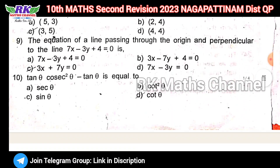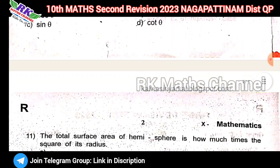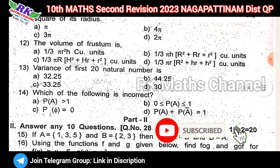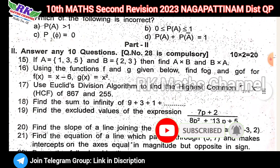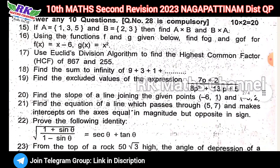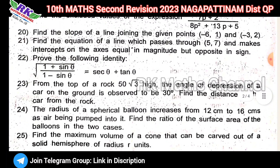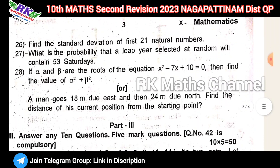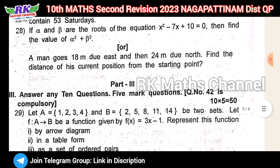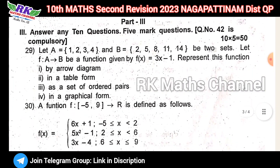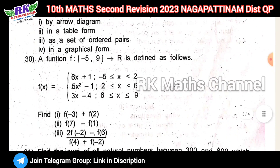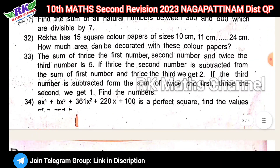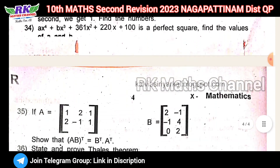You can download and see the question paper. First, Part One has 14 bits. Next, Part Two has two more questions — ten questions total. Question number 28 is a compulsory question. Next, Part Three has 5 more questions — ten questions total. Question number 42 is a compulsory question.